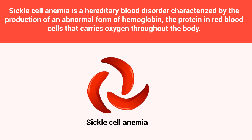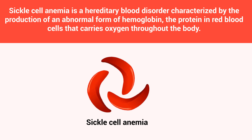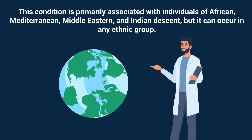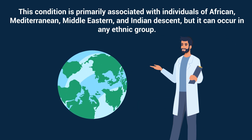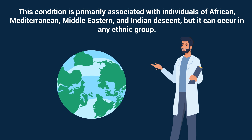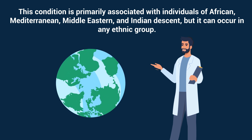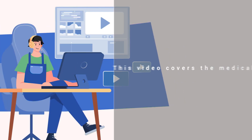Sickle cell anemia is a hereditary blood disorder characterized by the production of an abnormal form of hemoglobin, the protein in red blood cells that carries oxygen throughout the body. This condition is primarily associated with individuals of African, Mediterranean, Middle Eastern, and Indian descent, but it can occur in any ethnic group.